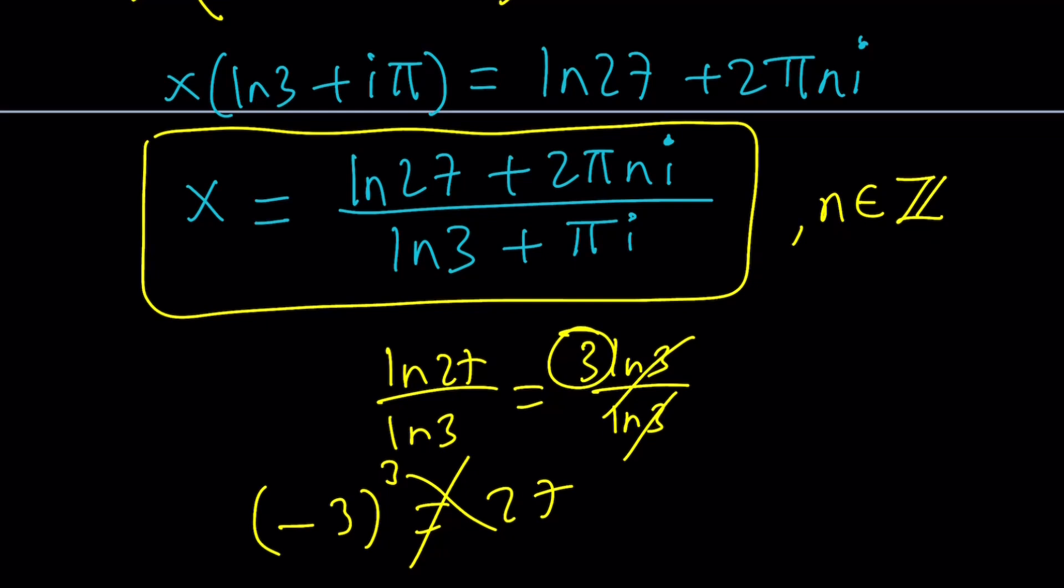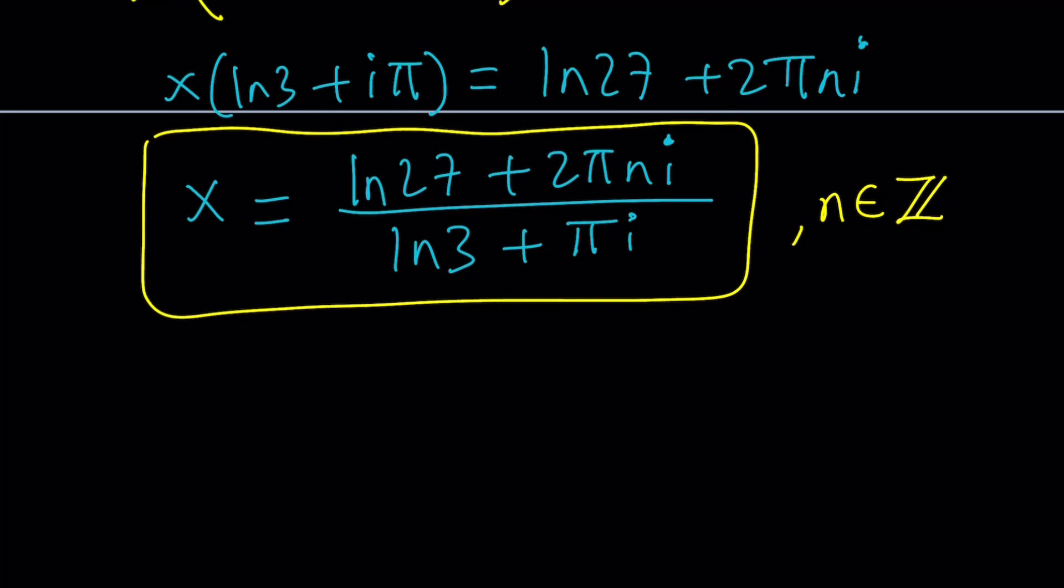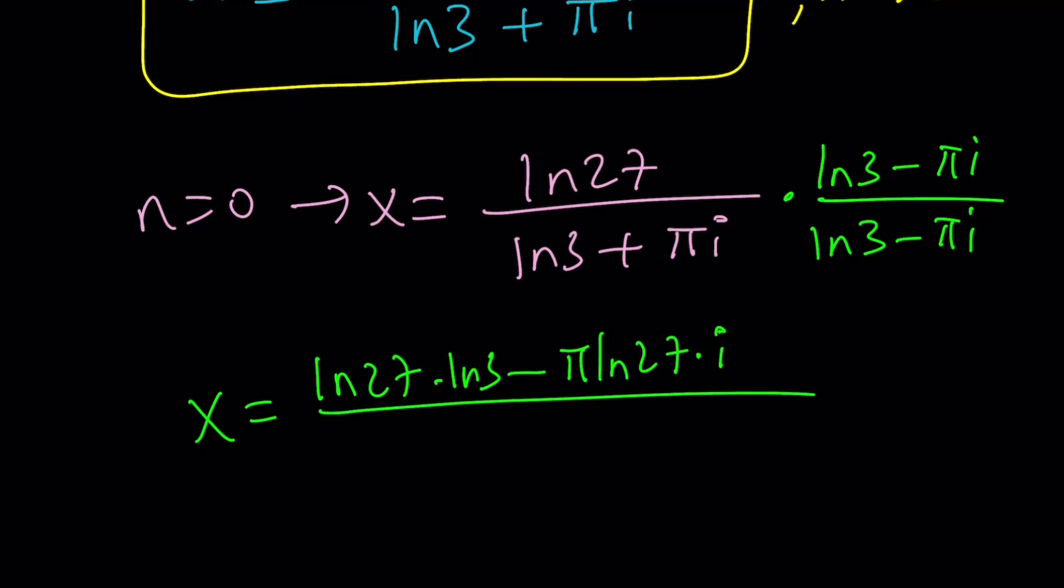Well, n can be 0. Wait a minute. Can we do that? Yes, n can be 0. Since n is an integer, let's go ahead and test it out. If n is 0, then x becomes ln 27 over ln 3 plus pi i. We're just missing it by a little bit. Pi i is an extra piece. But we can go ahead and multiply by the conjugate. And then from here, we should be getting something like ln 27 times ln 3 minus pi ln 27 i and then divided by ln 3 squared plus pi squared. Are you happy with that?